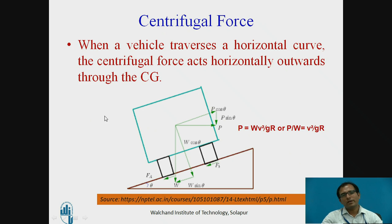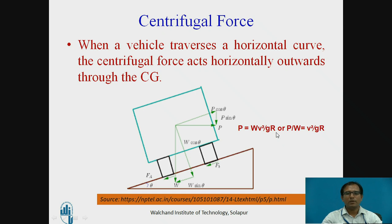We know that when a vehicle traverses a horizontal curve, the centrifugal force acts horizontally outwards through the CG. This centrifugal force depends upon the speed of the vehicle and radius of the curve, and is given by WV²/GR, or centrifugal ratio P/W = V²/GR, where V is the speed in meters per second, G is the acceleration due to gravity, and R is the radius of the curve in meters.